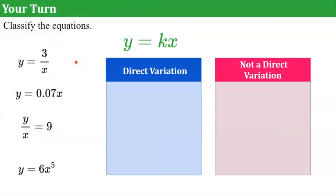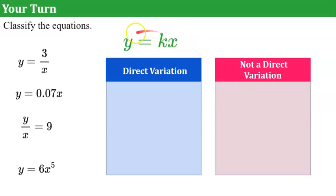Now it's your turn. I've given you four equations and you're going to classify each one as either a direct variation or not a direct variation. A direct variation is in the form Y equals K times X. Go ahead and pause the video now, decide where you're putting these four equations, and come back when you're ready to check your work.